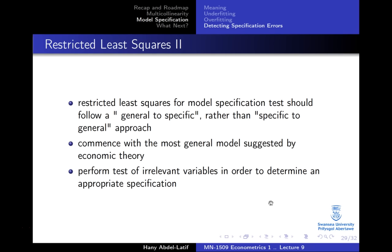So that's the idea of model specification — specifically the case of an underfitted model where you omit a relevant variable, and the case of an overfitted model where you include an irrelevant variable. That was a quick overview of model specification, the last topic for this term. In the next lecture we will do some exam revision. Thank you for watching and see you next time.